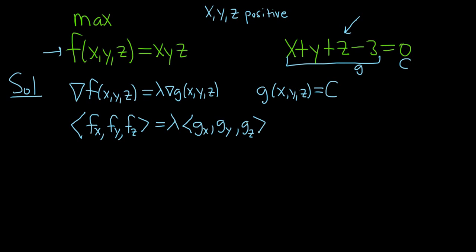So now we just have to work all of this out. The partial of f with respect to x: y and z are constants, so the derivative of x is just 1, so we just get yz. For f_y, the derivative of y is 1, so you're left with xz. And when you compute f_z, the derivative of z is 1, so you're left with xy, because x and y are constants.